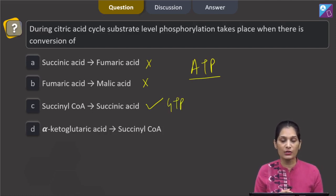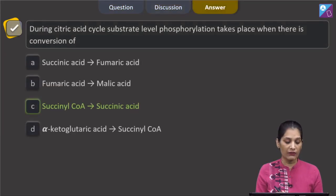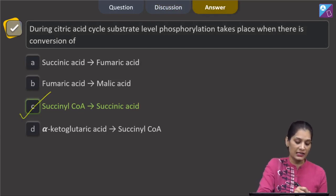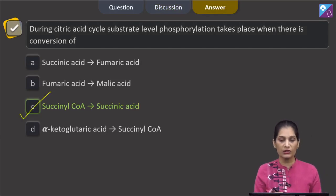From alpha ketoglutaric acid to succinyl coenzyme A, there is formation of NADH2 when there is conversion of alpha ketoglutaric acid to succinyl coenzyme A, but not the direct ATP. So the correct option for the given question is option C which says succinyl coenzyme A to succinic acid. Let us move to the next question.